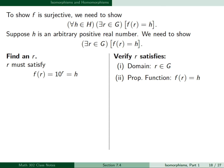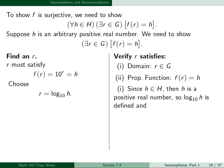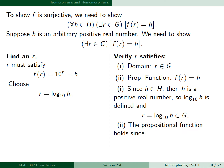We can choose r = log₁₀(h). Since h is a positive real number, log₁₀(h) is defined, and r = log₁₀(h) is an element of G. The propositional function holds since f(r) = 10^r = 10^(log₁₀(h)) = h. Therefore, f is surjective.